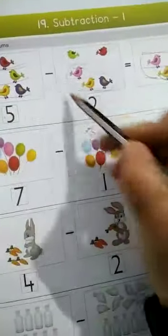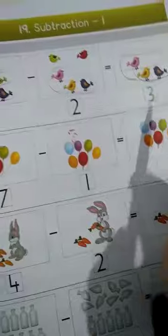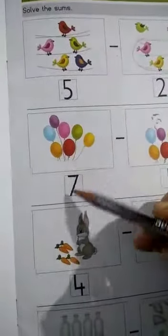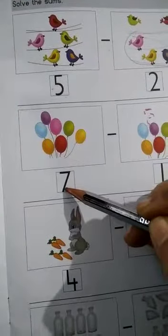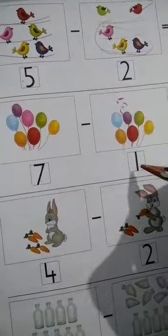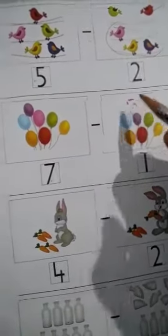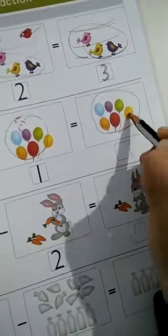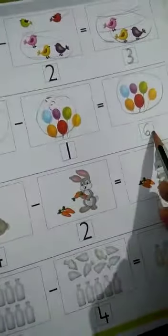Now down here there are seven balloons, so number seven is written here. Minus kiti balloons te atle foot leh, ekas balloon foot leh la hai. Seven balloons madla ek foot la aani kiti rahile magh, one, two, three, four, five, six. Seven minus one is equal to six remaining.